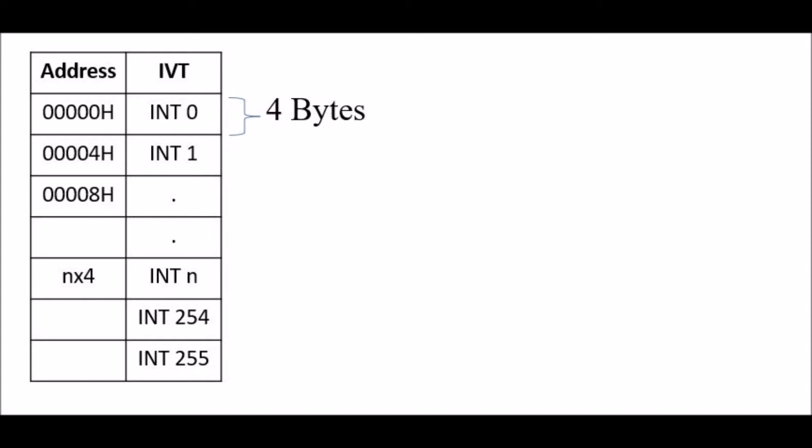Every interrupt has its own ISR address. The processor has to store 256 ISR addresses in memory called the IVT — Interrupt Vector Table. The IVT contains all the addresses of ISRs from INT0 to INT255 and vectors the processor to go to the ISR, hence the name Interrupt Vector Table. The starting address of IVT is 00000H. For every interrupt there are four bytes, so for 256 interrupts that is 256 × 4 = 1024 bytes, therefore the size of IVT is 1 KB.